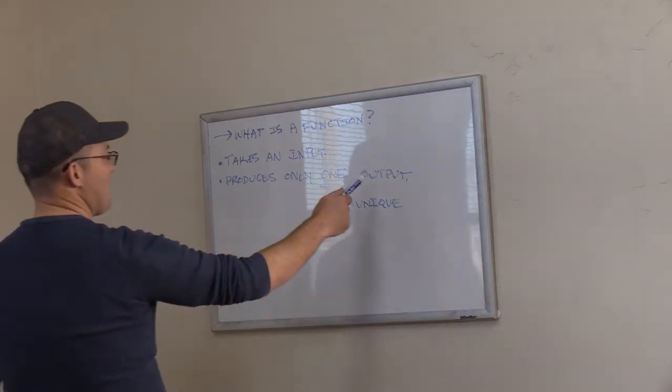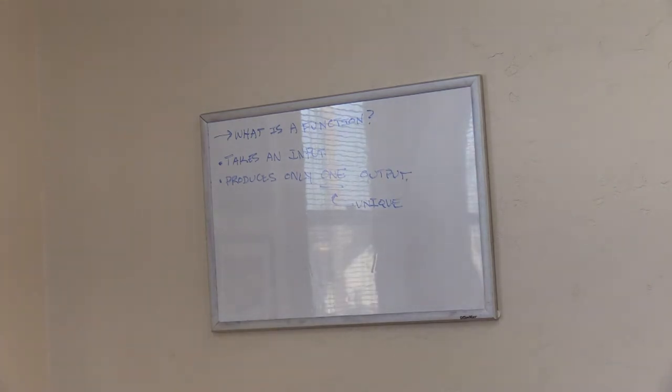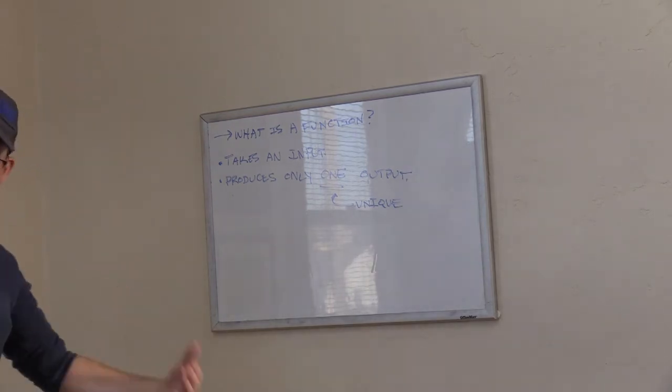So a function produces only one output. Okay, why are we even talking about this? Because the three things you use for trig, sine, cosine, and tangent, are functions. So I want to talk about what is the input you give them and what do they give you back. The input to a trig function is always the two sides of the triangle expressed as a ratio.